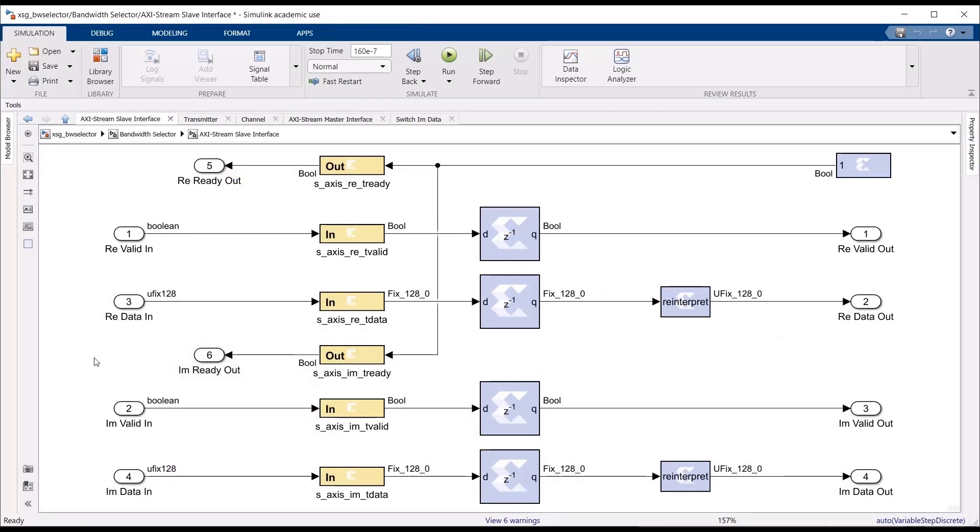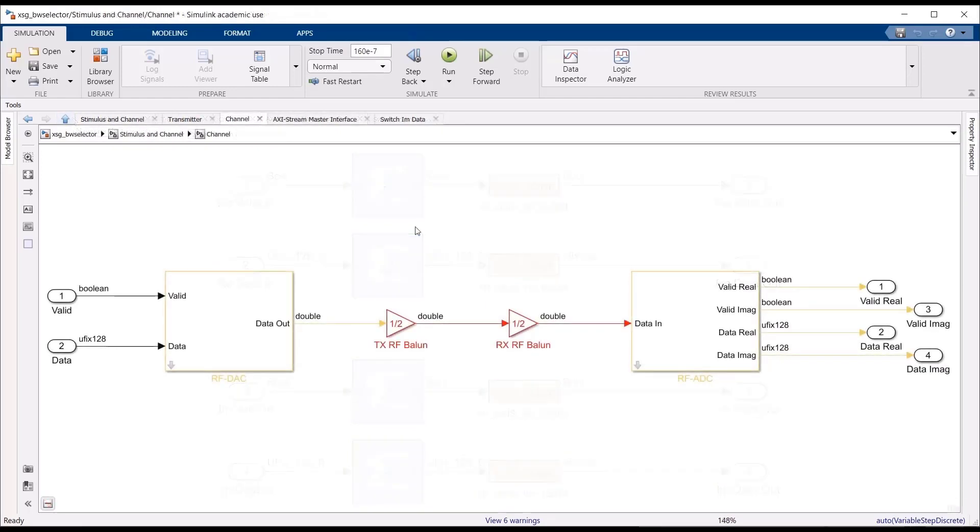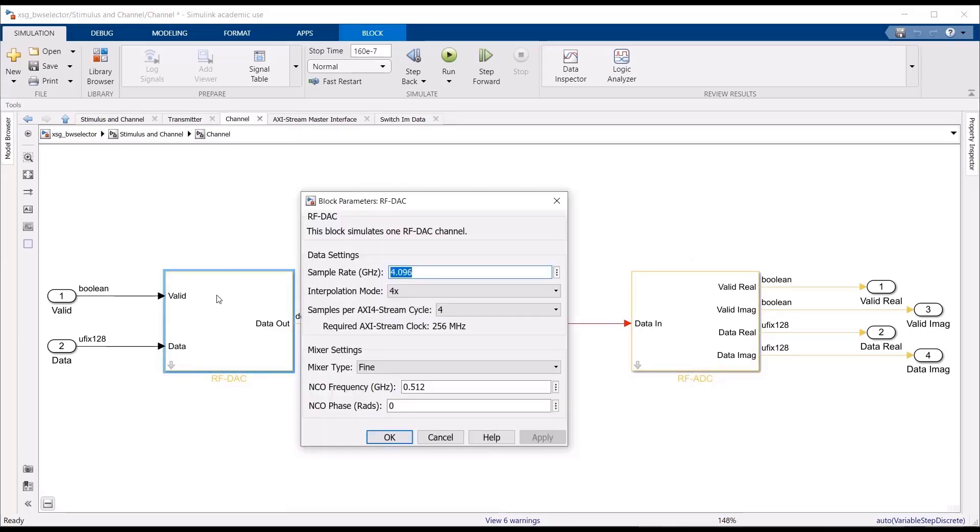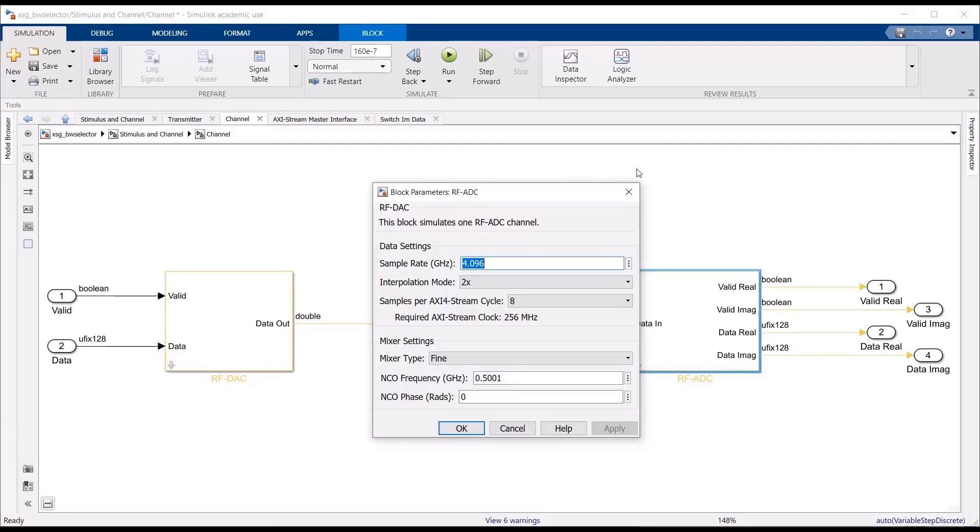One of the primary advantages of using System Generator is the MathWorks Simulink environment. We can use native Simulink blocks in the MATLAB workspace to create stimulus for our design. The blocks currently on screen are being used to simulate the RF data converter technology used in the RFSOC. With these blocks, we can accurately simulate our entire system to ensure that it will respond correctly before targeting hardware.